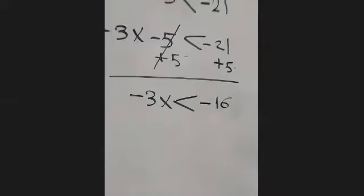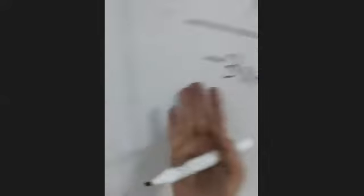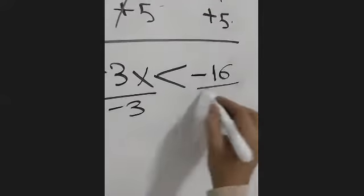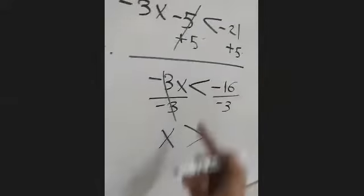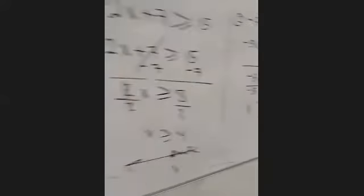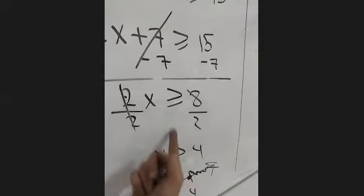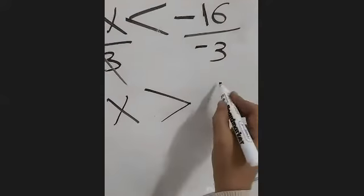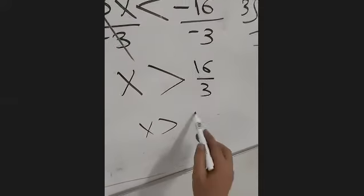Now step two: get rid of the negative three because it is multiplied by x, so we divide both sides by negative three. Because we divide by a negative number, we switch the inequality sign. Negative divided by negative is positive, so 16 ÷ 3 — doing the division: 15 ÷ 3 = 5 remainder 1 — so x > 5 and one-third.